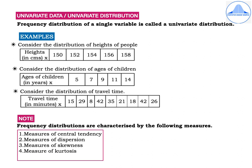Similarly, let's consider the distribution of travel time in minutes which is again denoted by small x and the travel time in minutes are 15, 29, 8, 42, 35, 21, 18, 42 and 26.